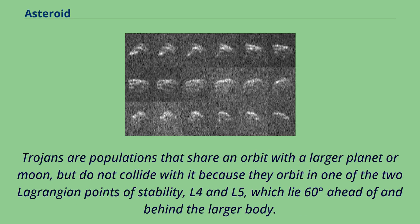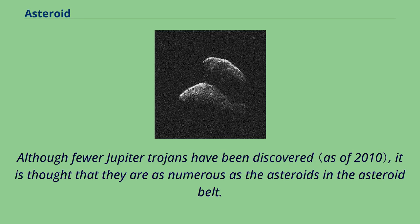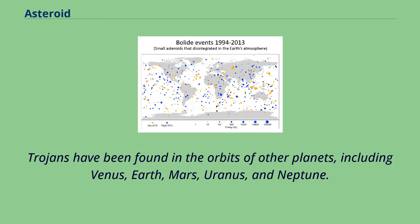Trojans are populations that share an orbit with a larger planet or moon, but do not collide with it because they orbit in one of the two Lagrangian points of stability, L4 and L5, which lie 60 degrees ahead of and behind the larger body. The most significant population of Trojans are the Jupiter Trojans. Although fewer Jupiter Trojans have been discovered, it is thought they are as numerous as the asteroids in the asteroid belt. Trojans have been found in the orbits of other planets, including Venus, Earth, Mars, Uranus, and Neptune.